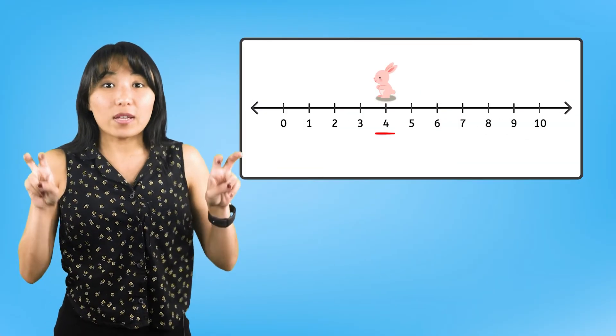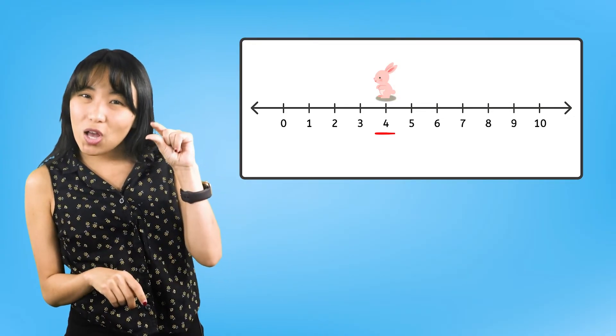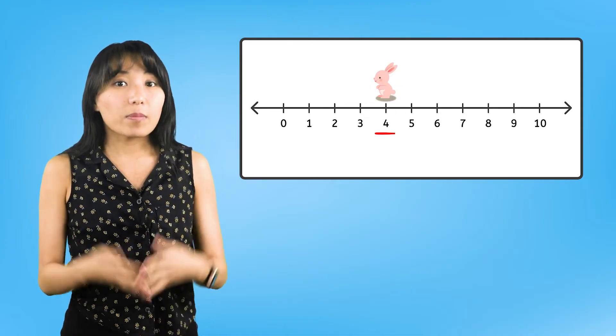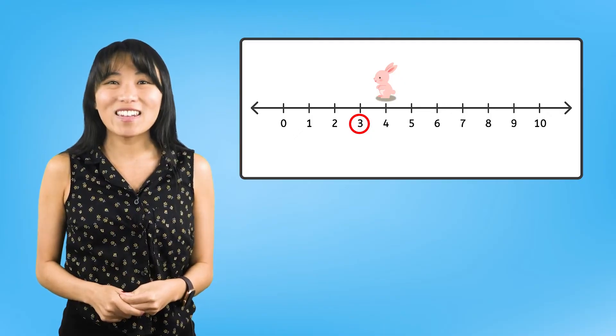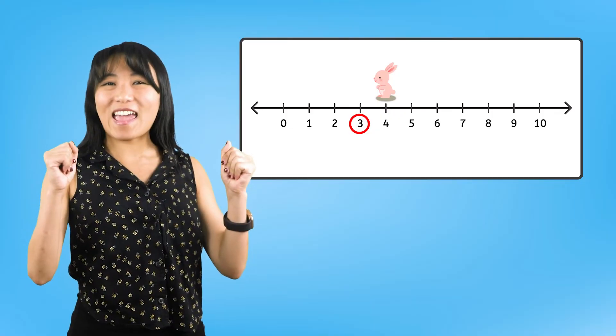With every Backward Bunny hop on the number line, the numbers get smaller by one. That means the number that comes before another number is one less. Let's get some more practice in Number Land.